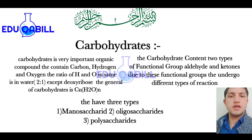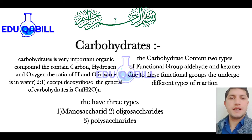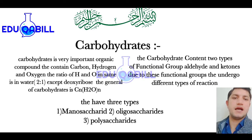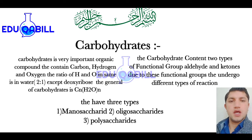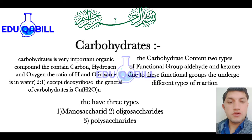Carbohydrates play very important roles in animal and plant bodies. Carbohydrates contain carbon, hydrogen, and oxygen. The ratio of hydrogen to oxygen in carbohydrate is the same as in water, that is 2:1, except deoxyribose which is present in DNA. The general formula of carbohydrate is C_n(H2O)_n. Carbohydrate contains two types of functional groups: aldehyde and ketone.